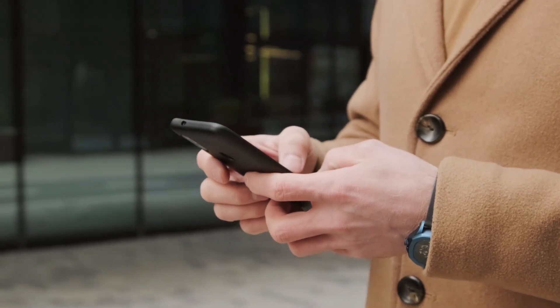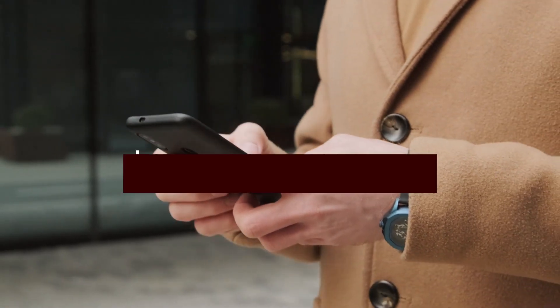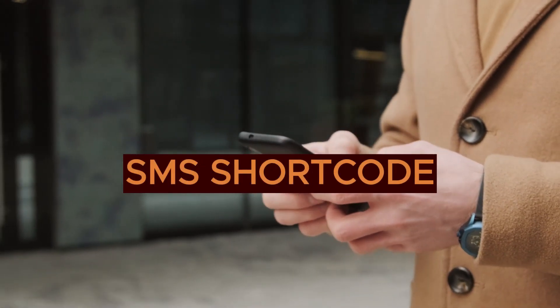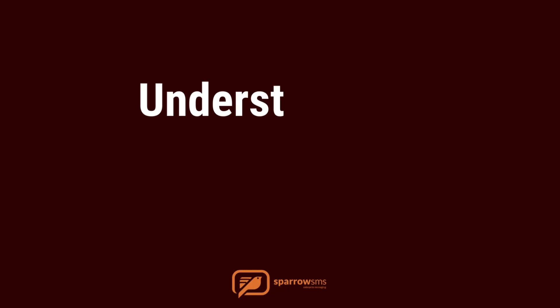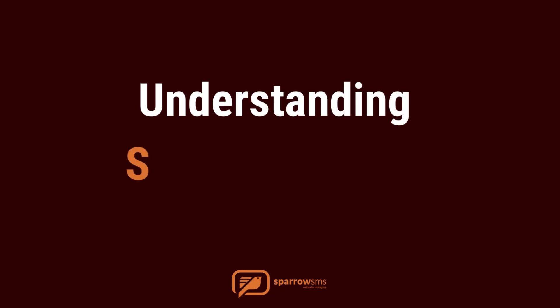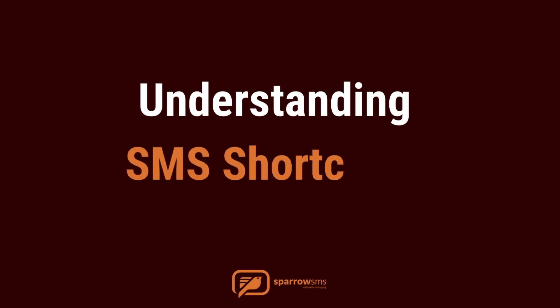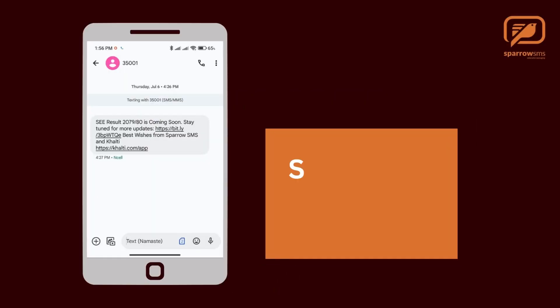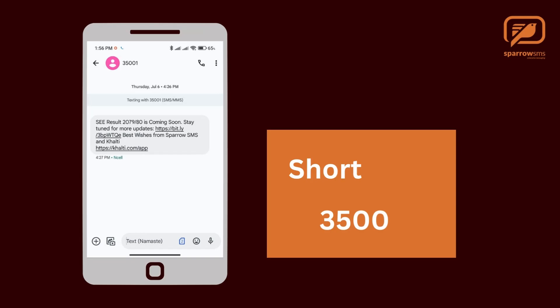Welcome to our introductory guide on SMS shortcodes. In the world of text messaging, SMS shortcodes are powerful tools used for communication and engagement. An SMS shortcode is a shortened phone number, typically consisting of five or six digits, used to send and receive text messages. These short, memorable numbers are widely utilized by businesses and organizations for various purposes.